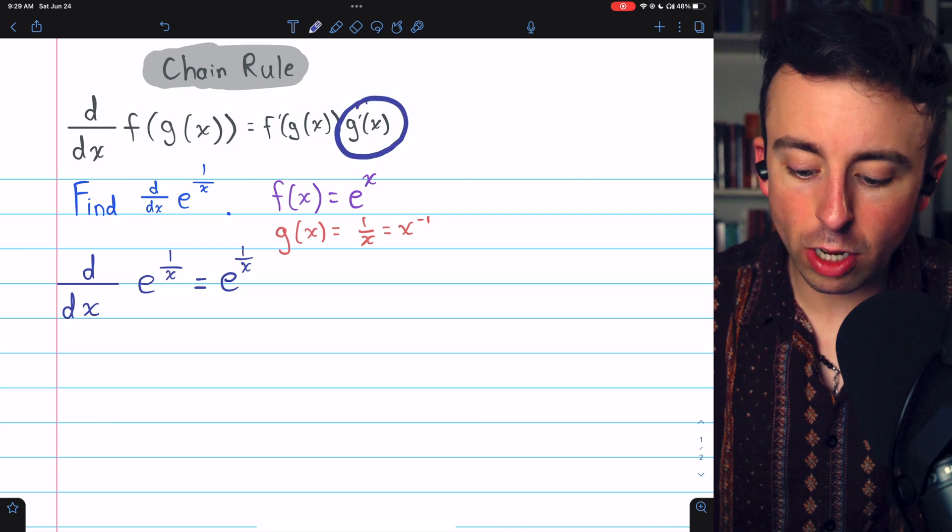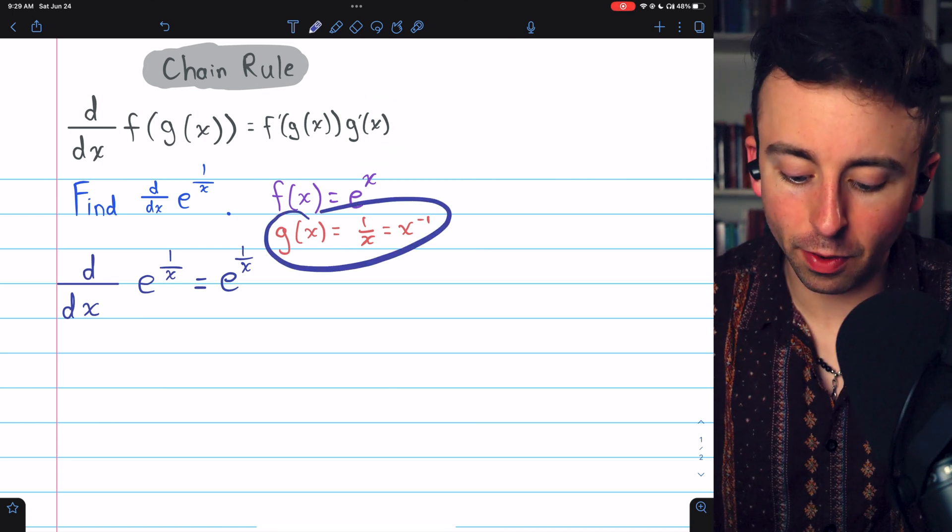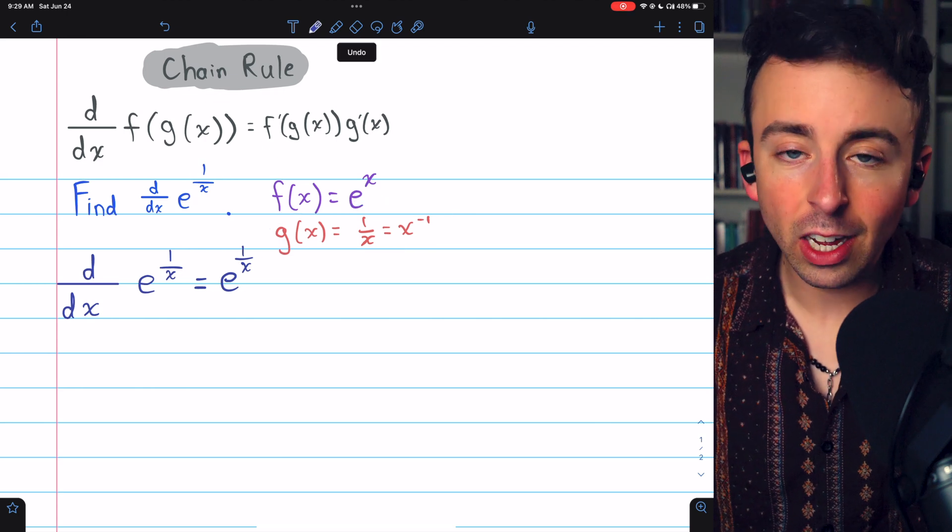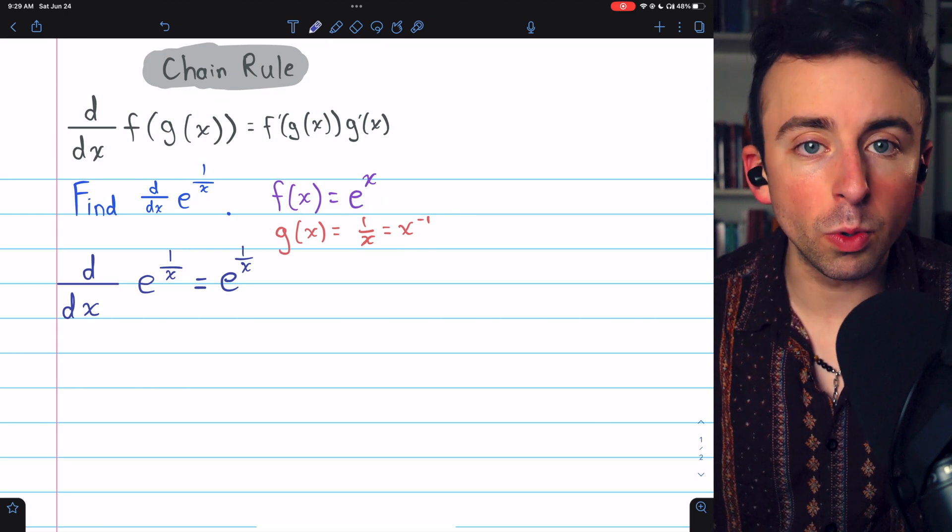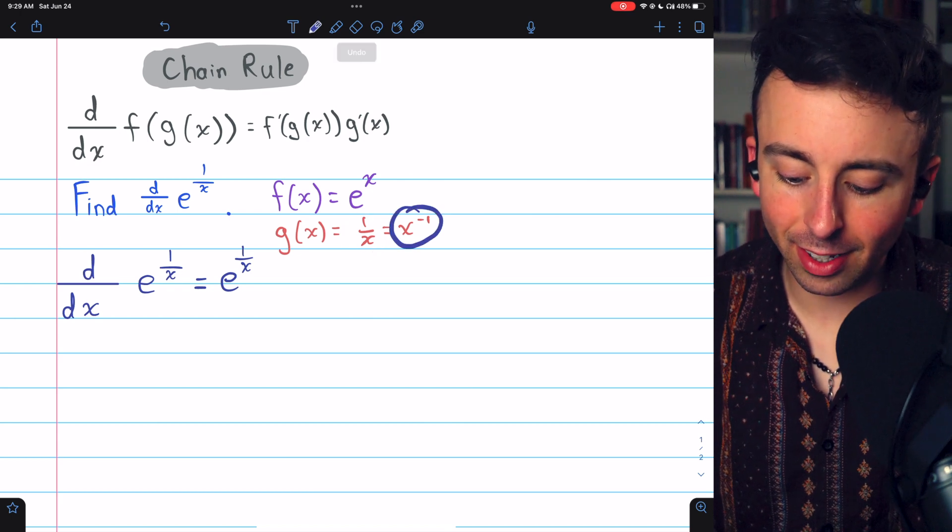Then we multiply by g prime the derivative of the inside function. Again the inside function is 1 over x. We can take its derivative using the power rule. Like we said 1 over x is the same as x to the negative 1.